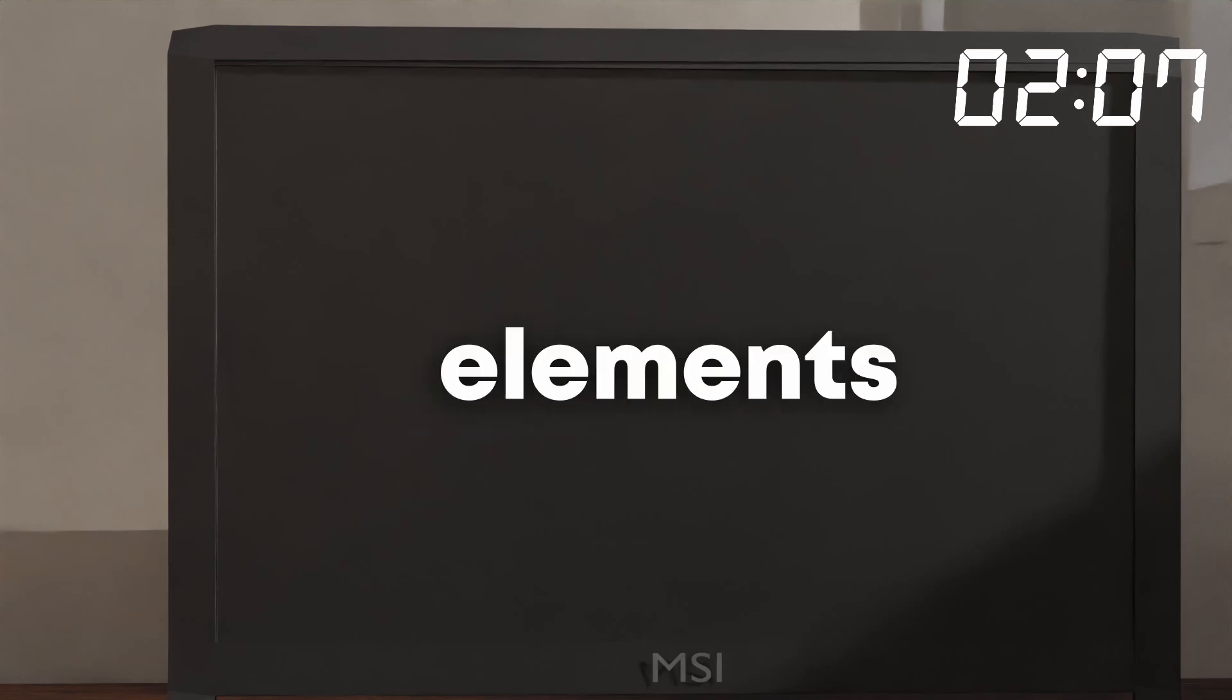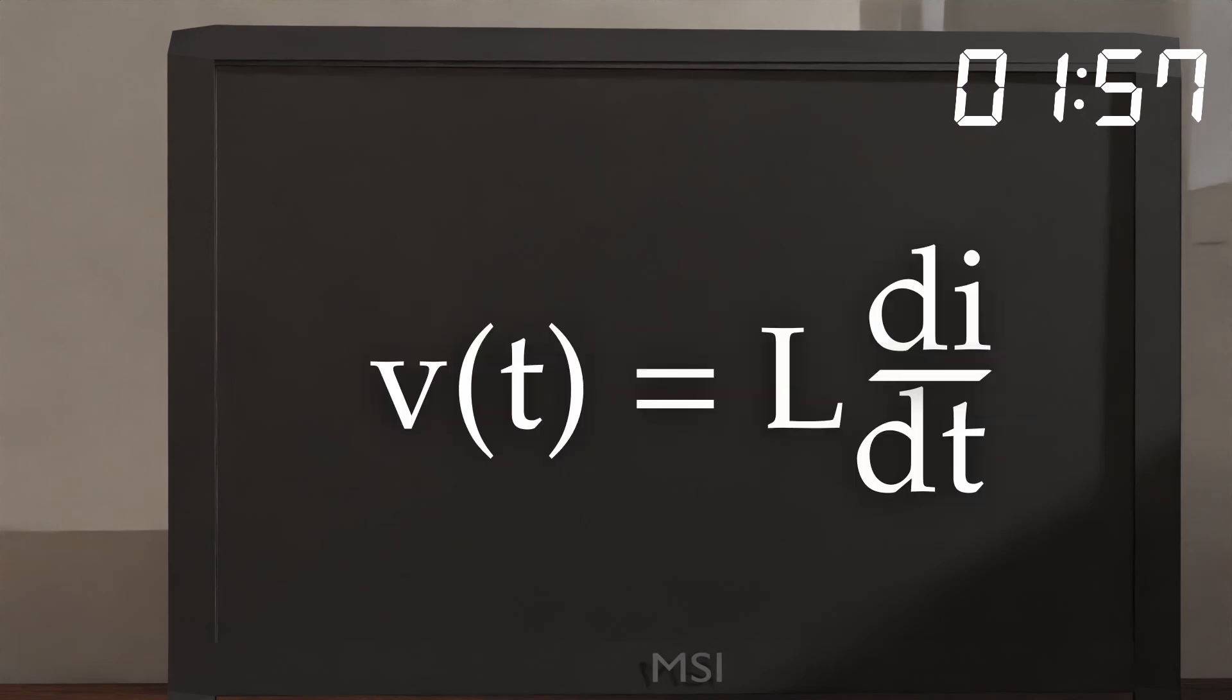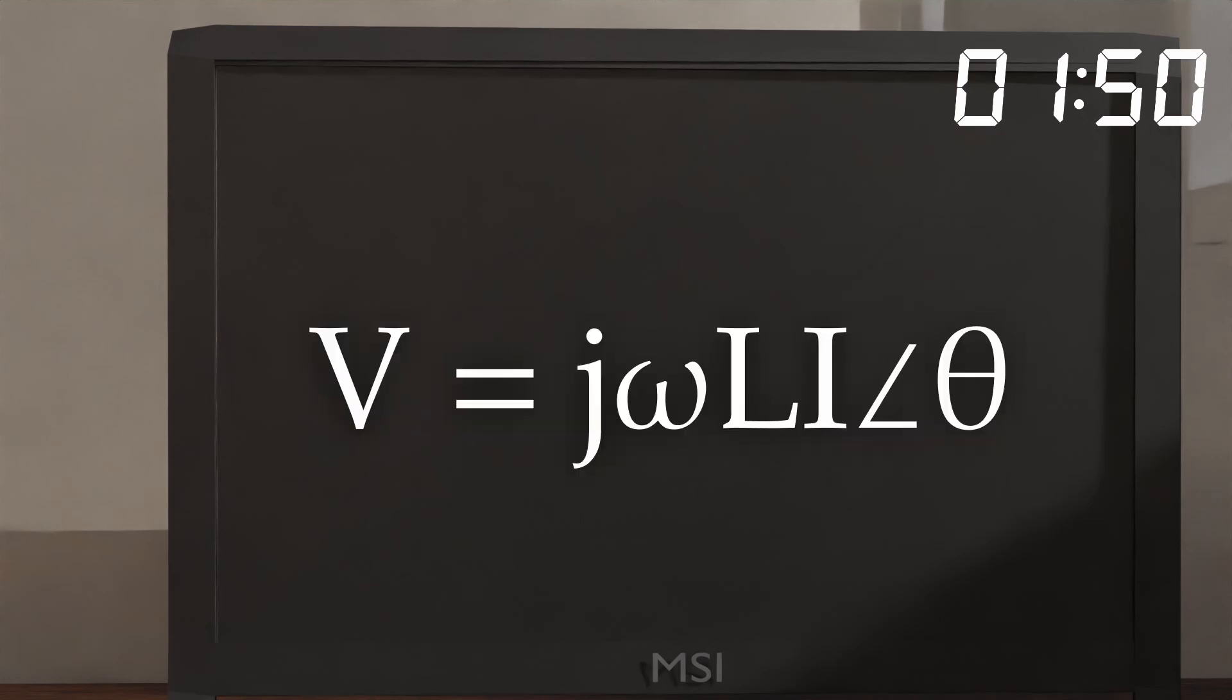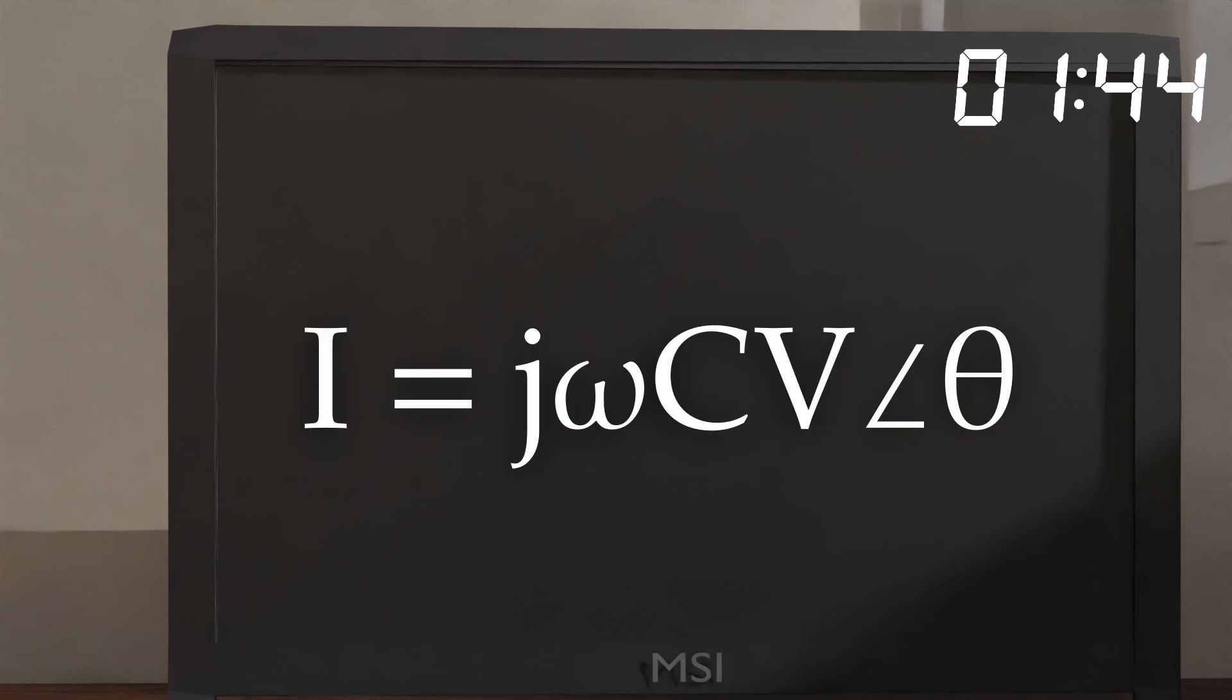Now let's relate this to circuit elements. Current is simply this in phasor form. Voltage is current times resistance, so it's this. The relation between voltage and current in an inductor contains a derivative. In the time domain, you take this derivative. In the phasor domain, we see that all you have to do is multiply by jωL.